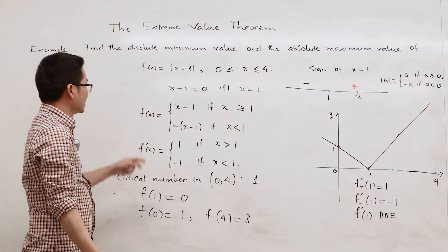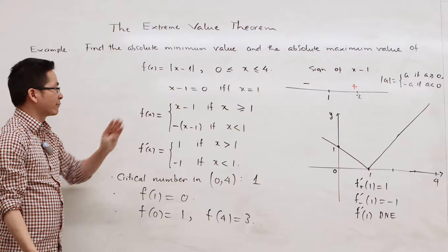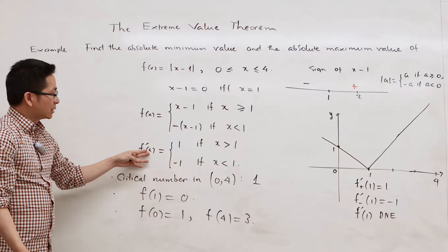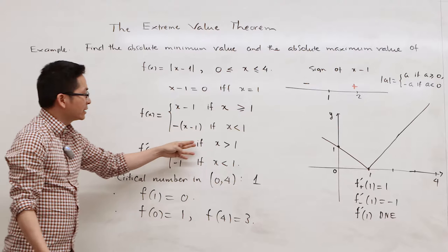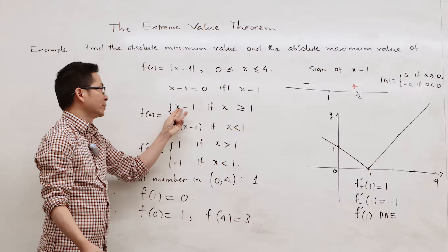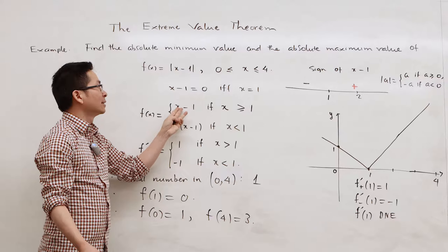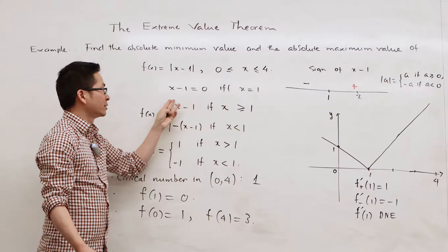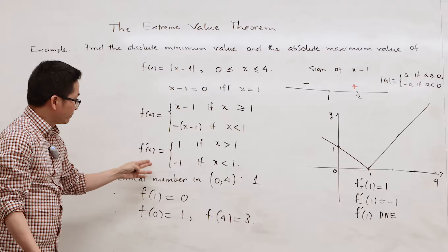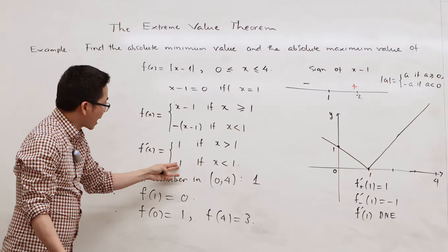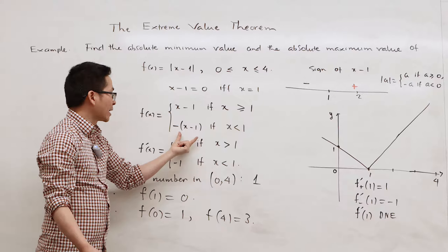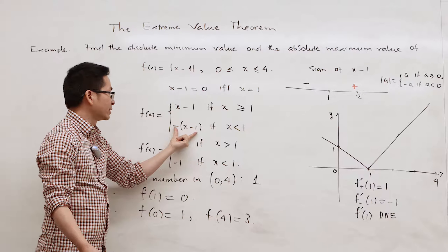The derivative of the function is 1 if x is strictly greater than 1 — we simply find the derivative of x minus 1. The derivative of the function is minus 1 if x is less than 1, which is the derivative of -(x minus 1).